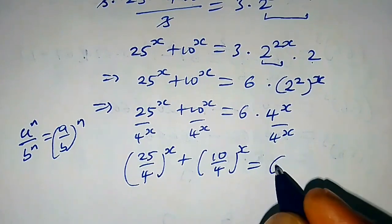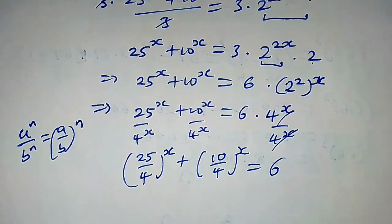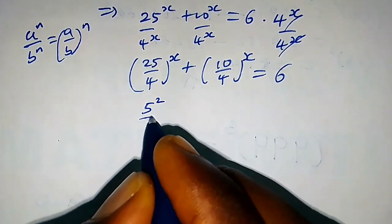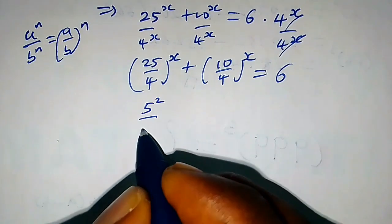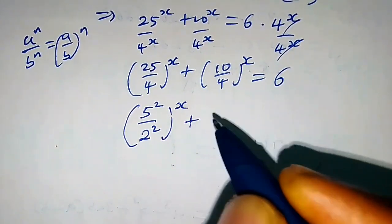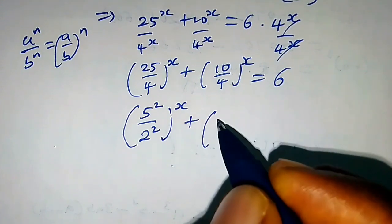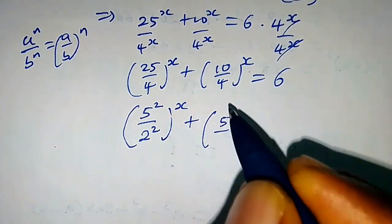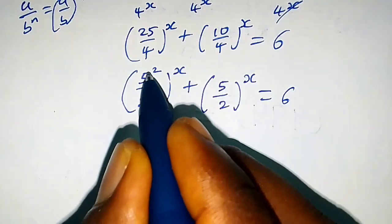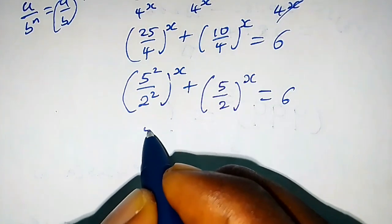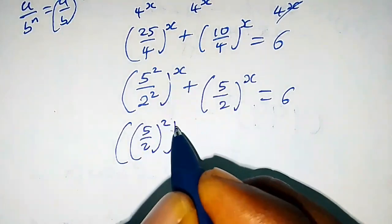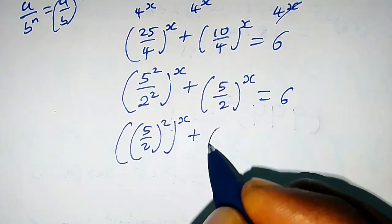Because the 4^x cancels, let's proceed further. 25 can be written as 5 squared over 2 squared, which is (5/2)^2. We can also reduce 10 over 4: 2 into 10 gives 5, and 2 into 4 gives 2, so that becomes (5 over 2) raised to the power x. This equals 6.